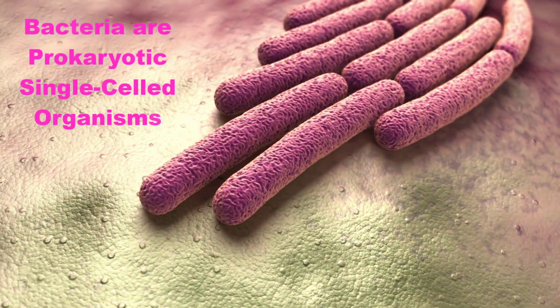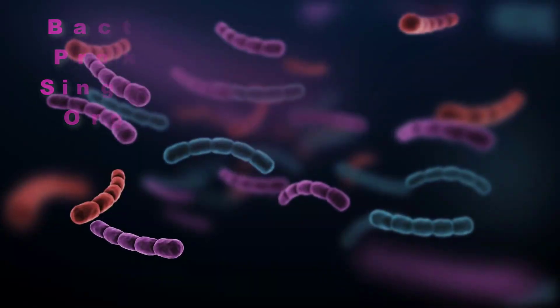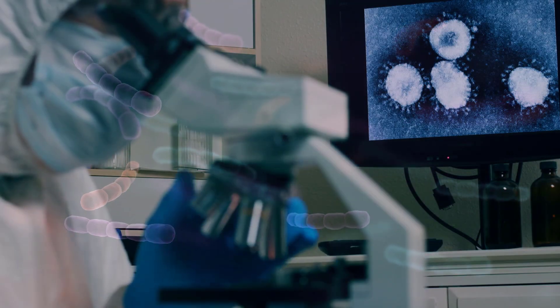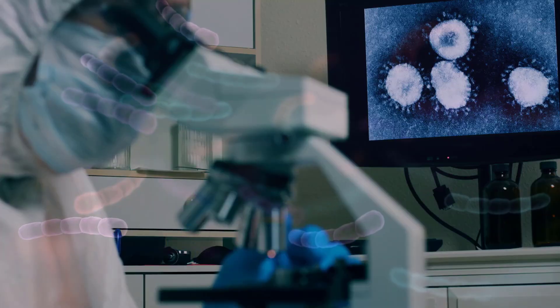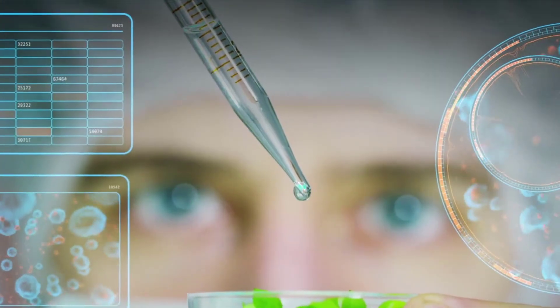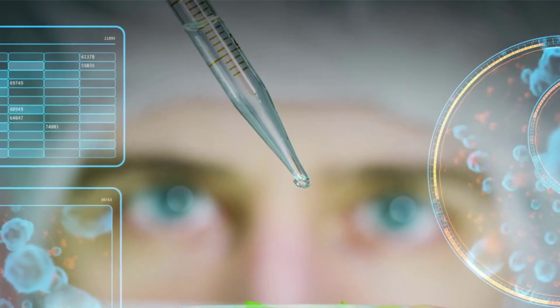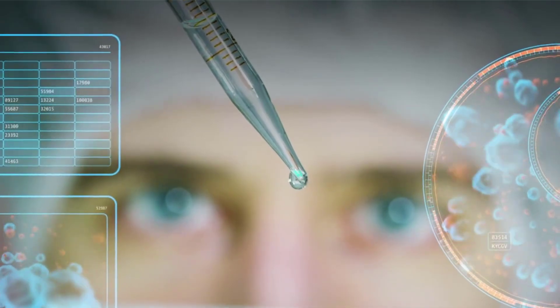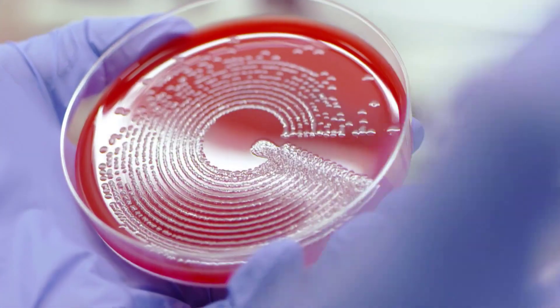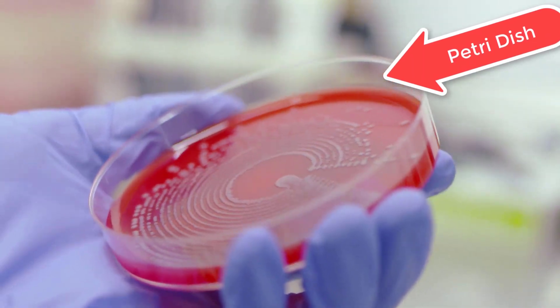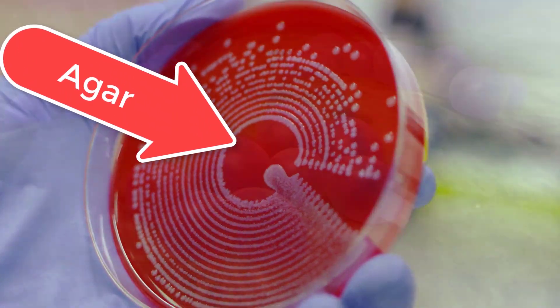Bacteria are prokaryotic single-celled organisms. Individual bacterial cells are visible with the aid of high-powered microscopes. Under proper nutritional and environmental conditions, bacteria can be controlled in a laboratory setting. They are usually cultivated in sterile petri dishes containing a gelatin-like nutrient called agar.